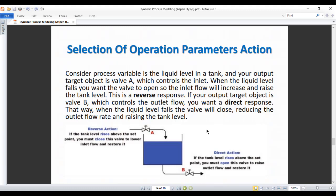If your output target object is valve B, which controls the outlet flow, you want a direct response. That way, when the liquid level falls, the valve will close reducing the outlet flow rate and raising the tank level.